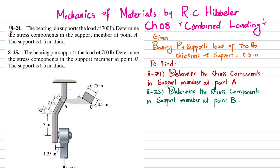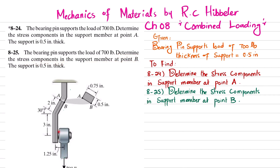Welcome back. In this video we are going to solve problems 8-24 and 8-25 taken from Chapter 8, Combined Loading, in Mechanics of Materials by R.C. Hibbeler. The problem states: a bearing pin supports a load of 700 pounds. Determine the stress components in the support member at point A — the support is 0.5 inches thick — and in 8-25, determine the stress components at point B.